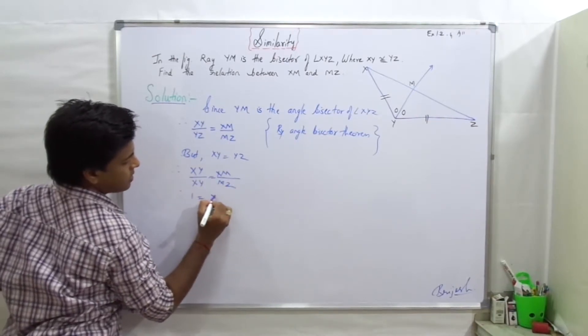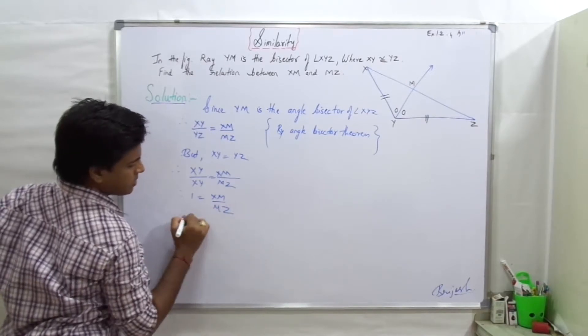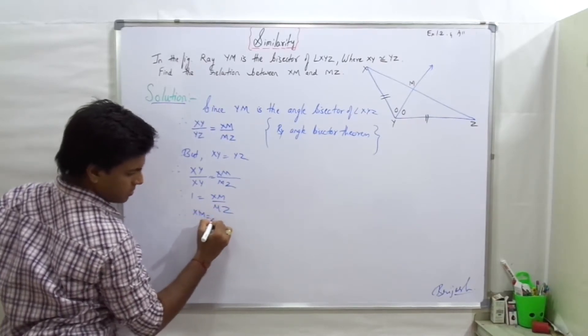Therefore, 1 equals XM upon MZ. Therefore, XM equals MZ.